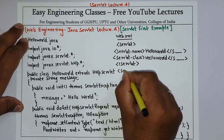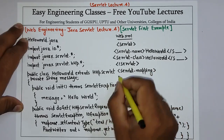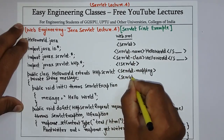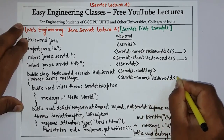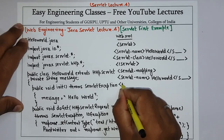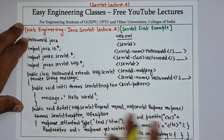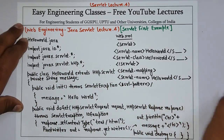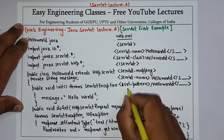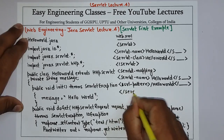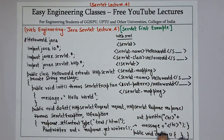Then you have to create a servlet-mapping tag. Inside it again add a servlet-name tag with the value HelloWorld. Then use the url-pattern tag — this is the pattern used to open this particular Java code in the web browser. You can specify anything, but for simplicity I am using the same name: /HelloWorld. Then close the url-pattern tag and finally close the servlet-mapping tag.